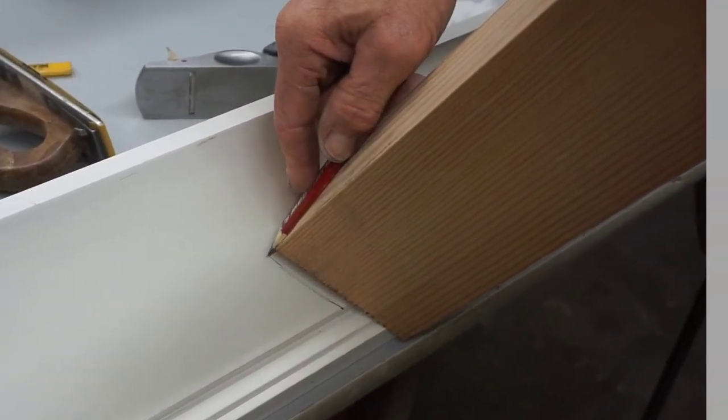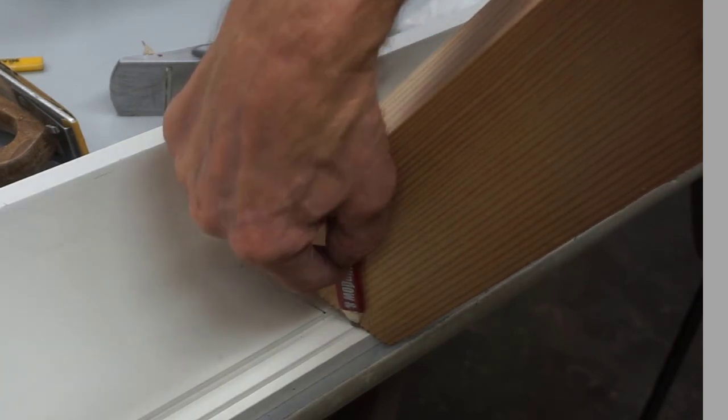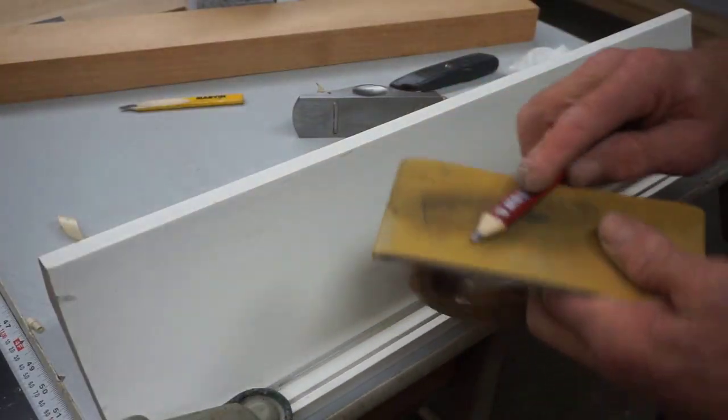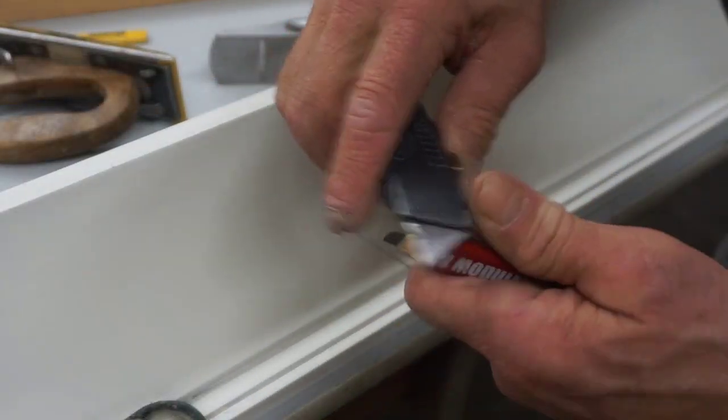Once the pencil is sharpened, you can make very nice accurate scribes in some pretty unique situations. Re-sharpening the lead then is just a matter of a quick rub on the sandpaper and possibly a little bit of tune-up with a knife.